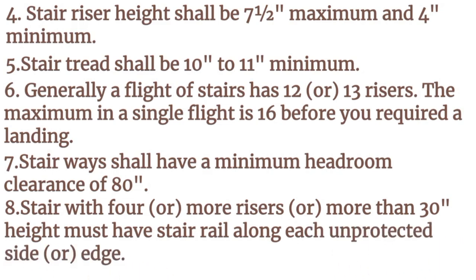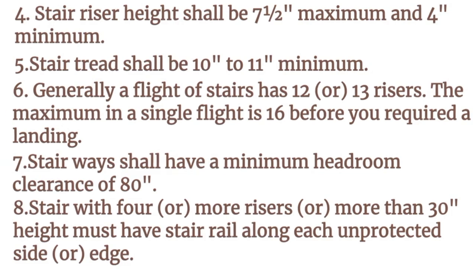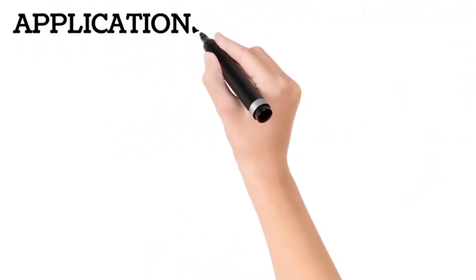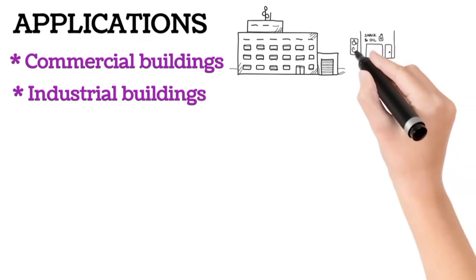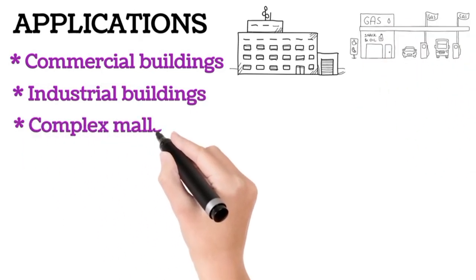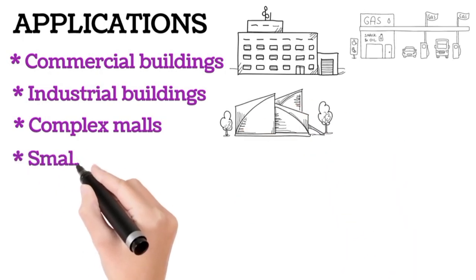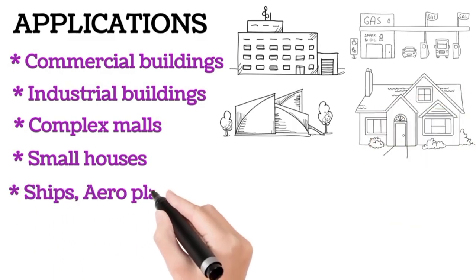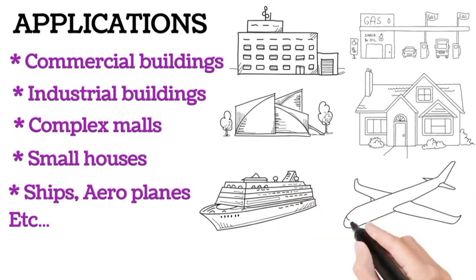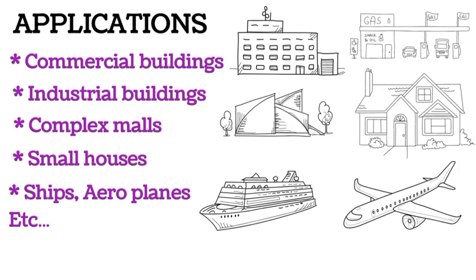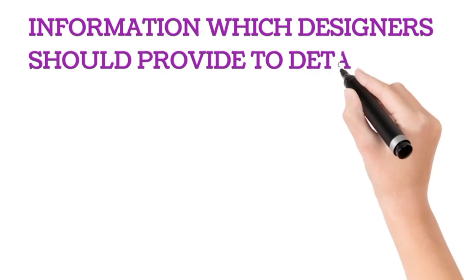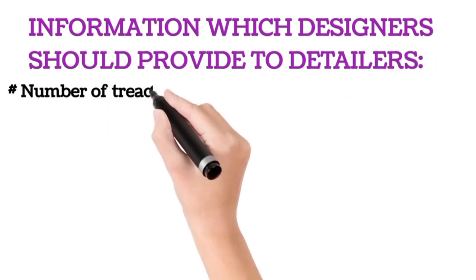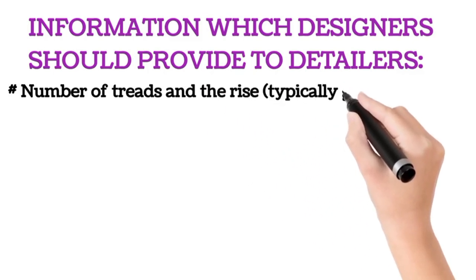8. Stair rail along each unprotected side or edge, stairs with 4 or more risers or more than 30 inches in height must have a stair rail. 9. Stair rail along each unprotected side or more than 30 inches in height must have one. 10.